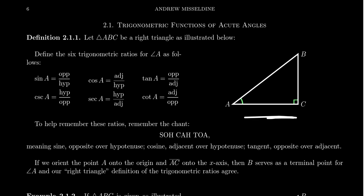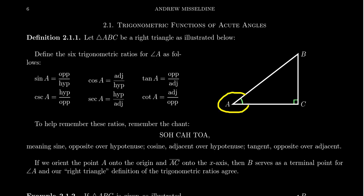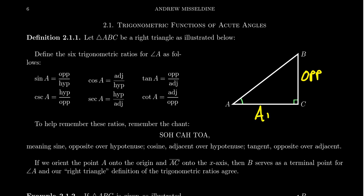Consider the triangle ABC shown here, where C is the right angle. We can define sine, cosine, tangent, cosecant, secant, and cotangent with respect to angle A. When talking about the sides of a triangle relative to an angle, we use the following notation: segment BC is the opposite side — the side opposite angle A, abbreviated OPP. Side AC, which includes angle A, is the adjacent side, ADJ for short. Side AB is the hypotenuse, HYP for short.